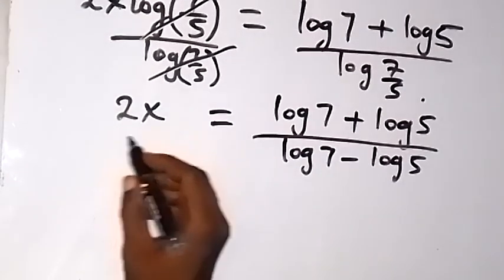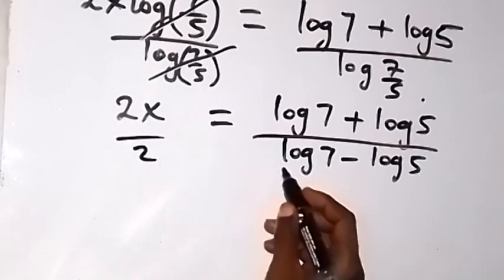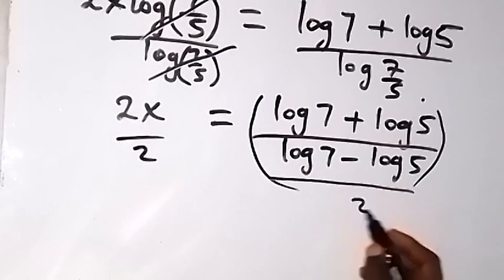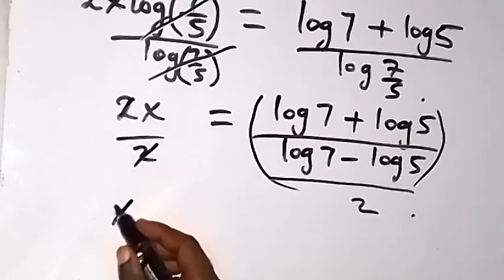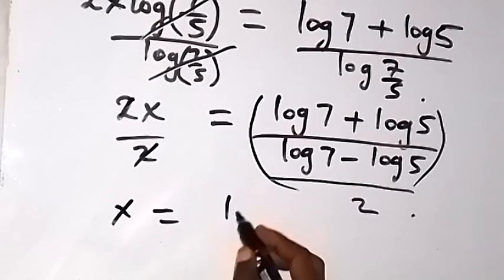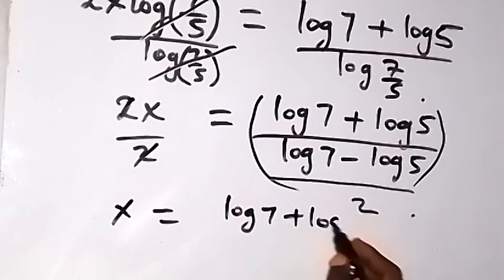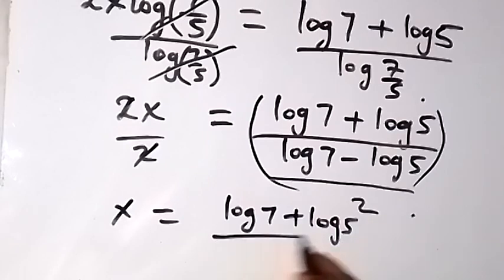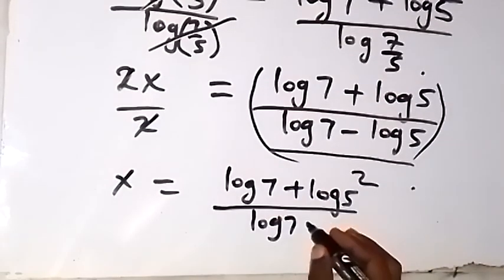Since what we are finding is just x, we can remove this 2 by dividing both sides by 2. So 2 cancels 2 here, and we are left with x equals (log 7 plus log 5) divided by (log 7 minus log 5).